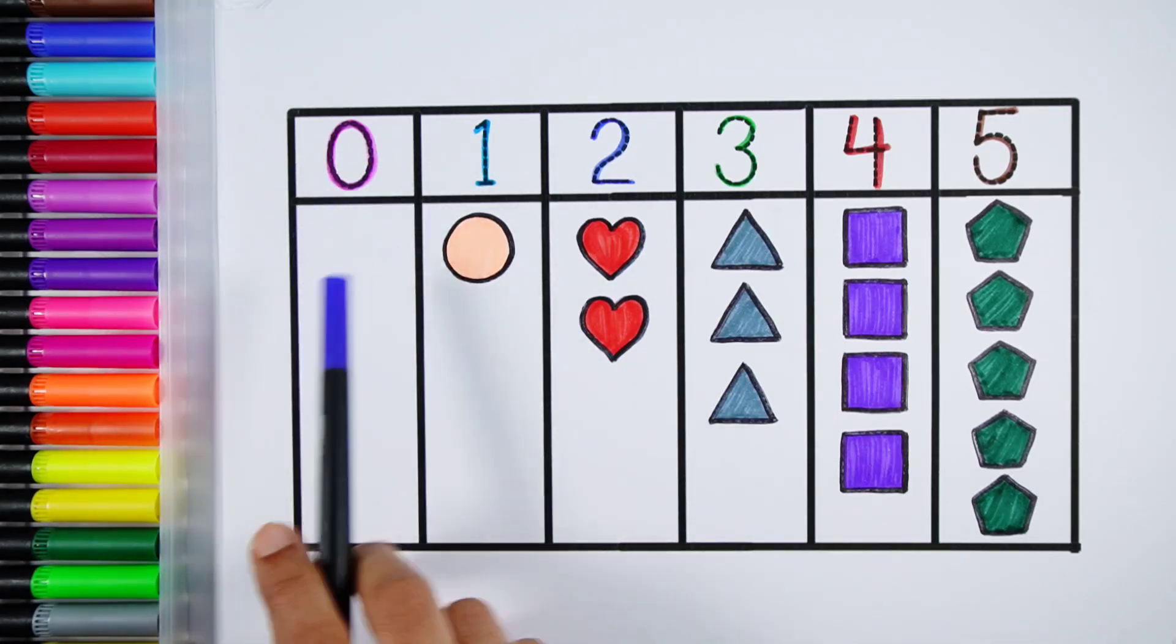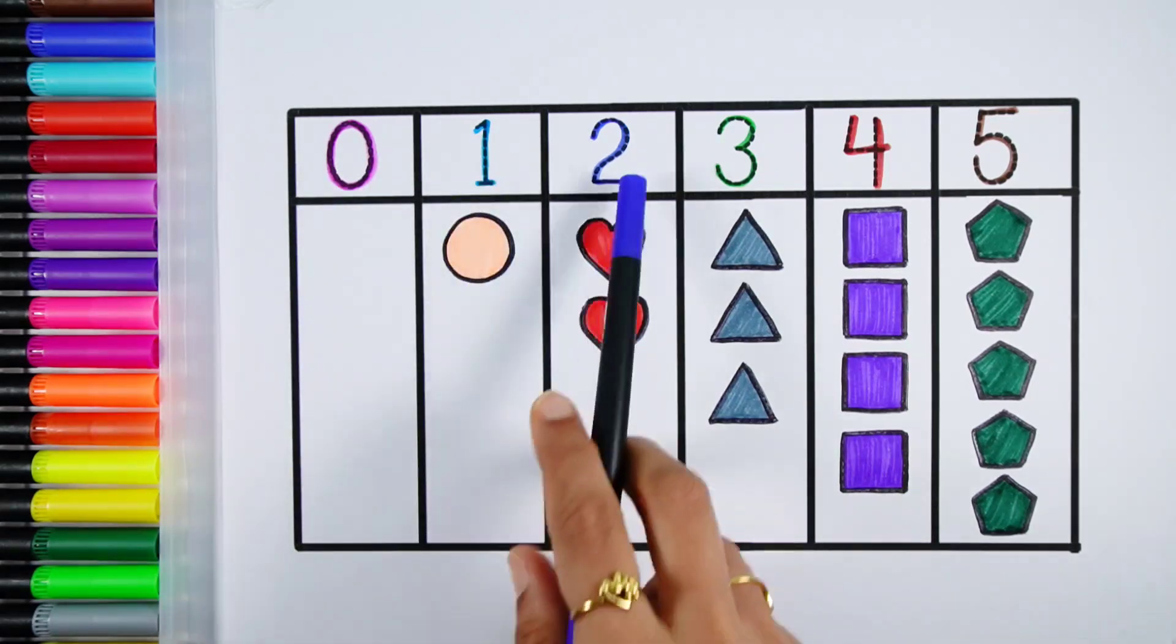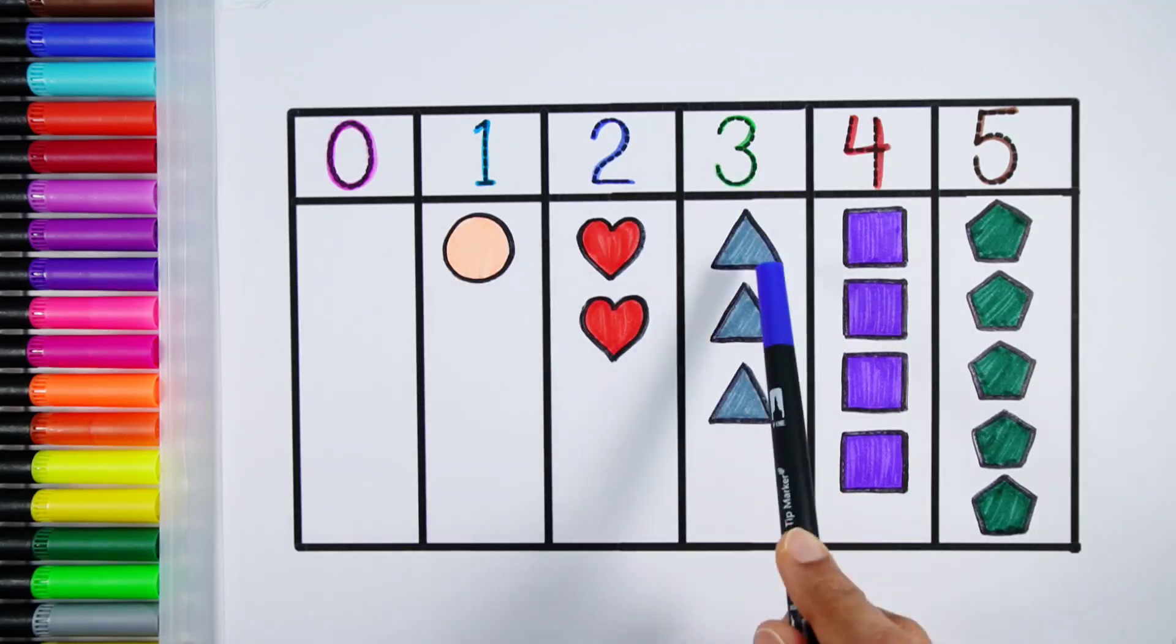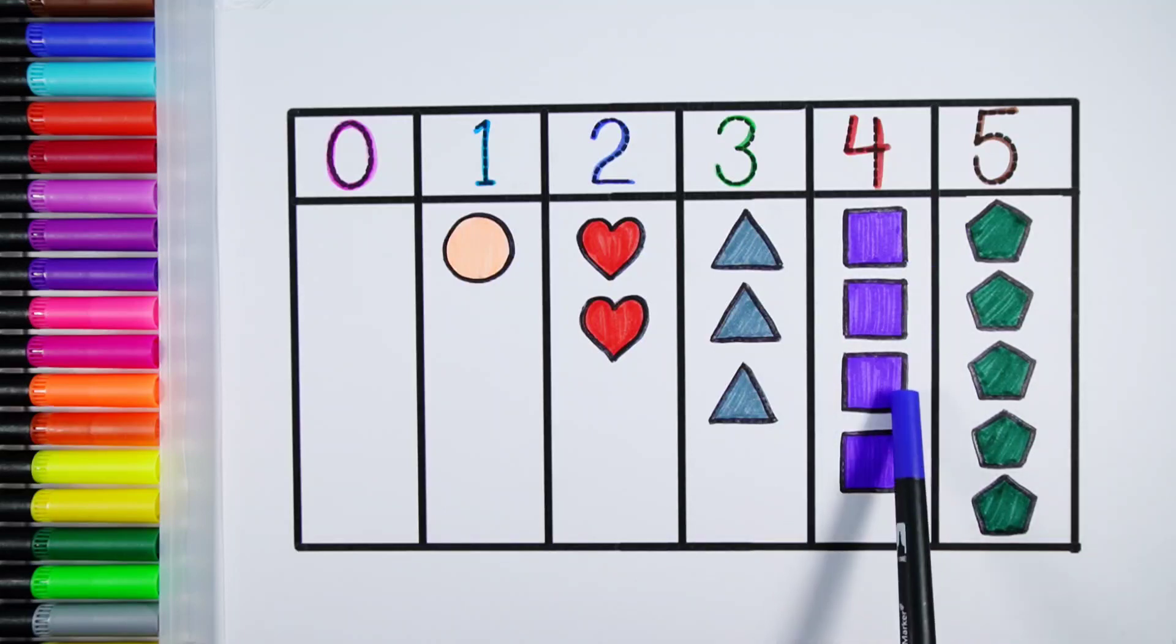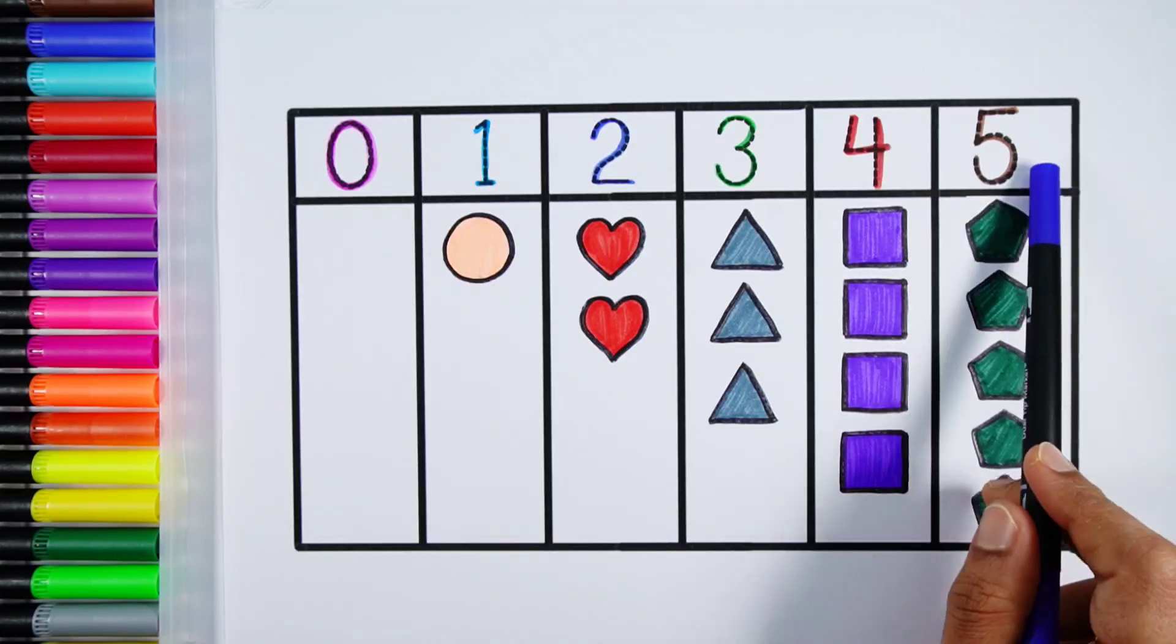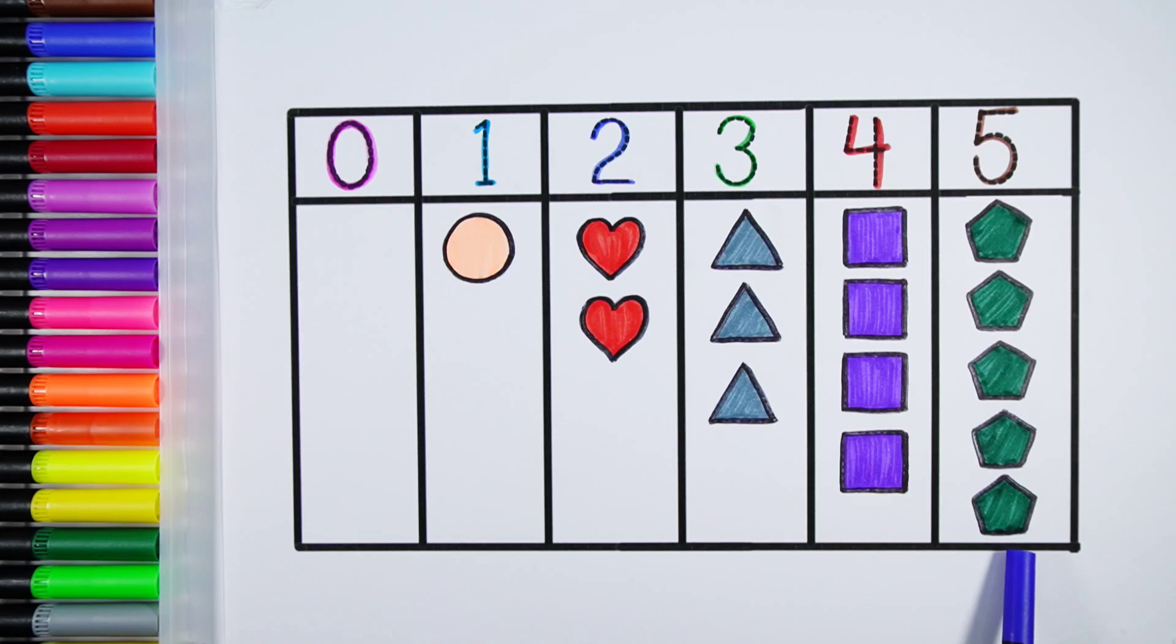Zero, zero shapes. One, one circle. Two, one, two, two hearts. Three, one, two, three, three triangles. Four, one, two, three, four, four squares. Five, one, two, three, four, five, five pentagons.